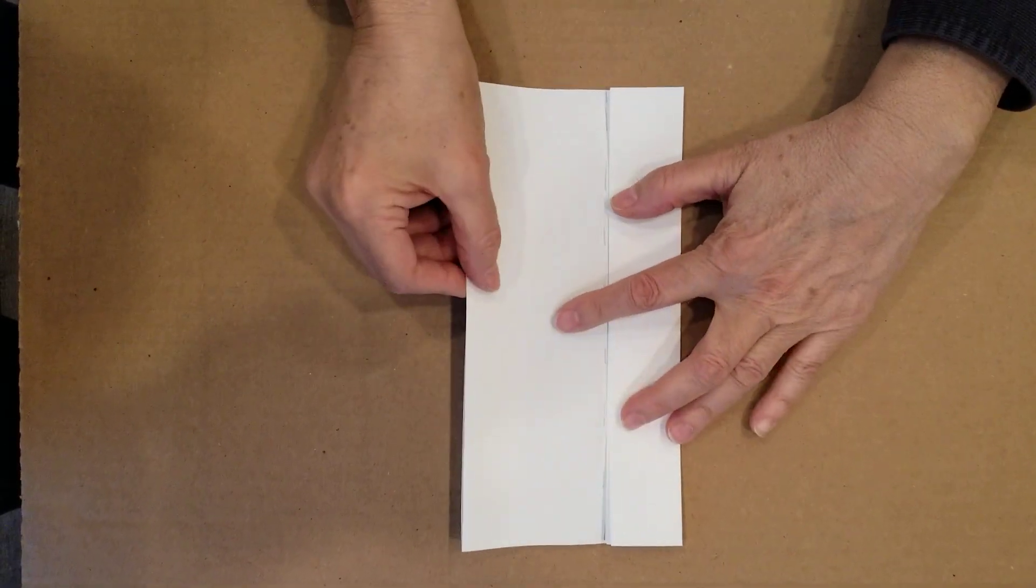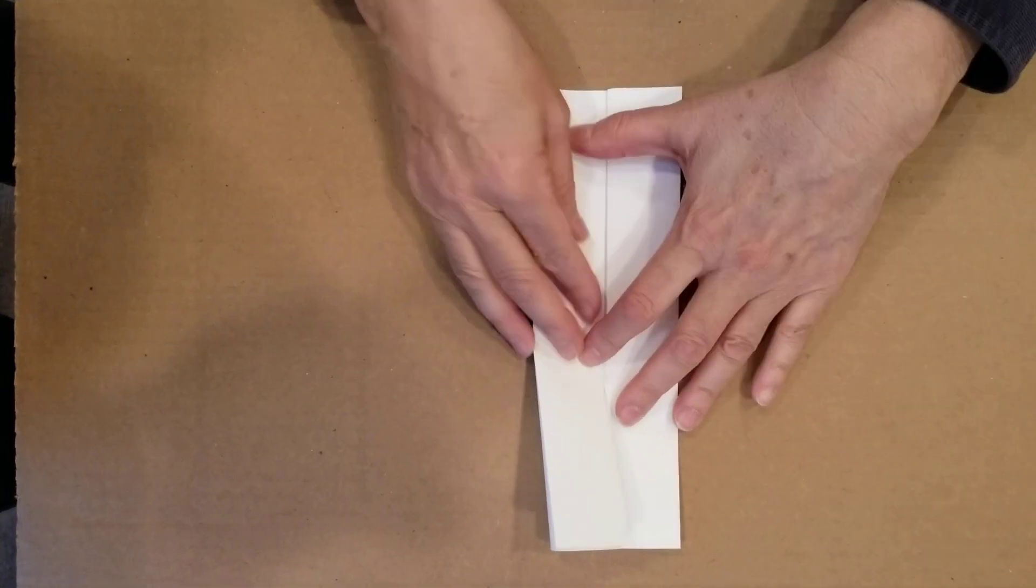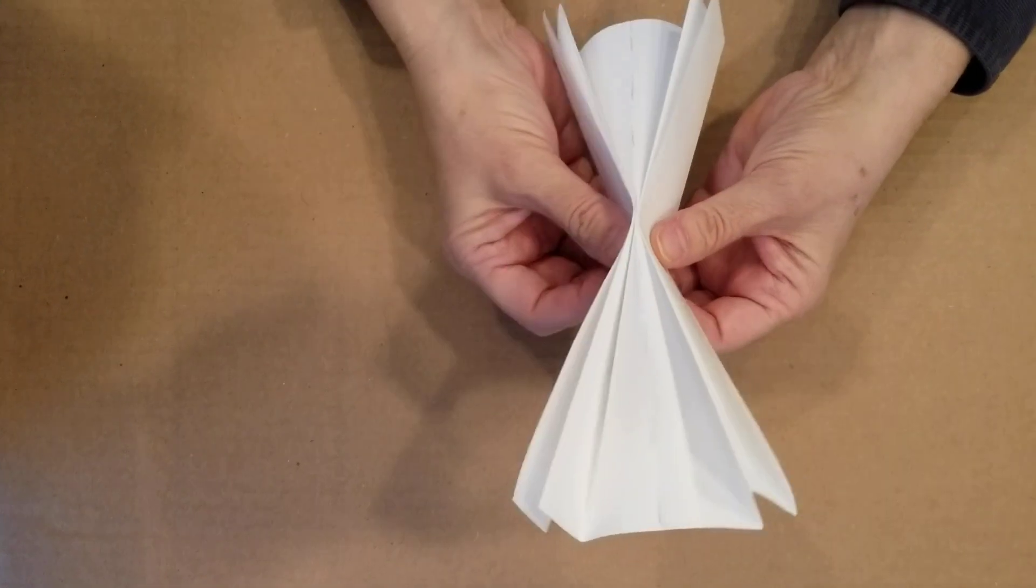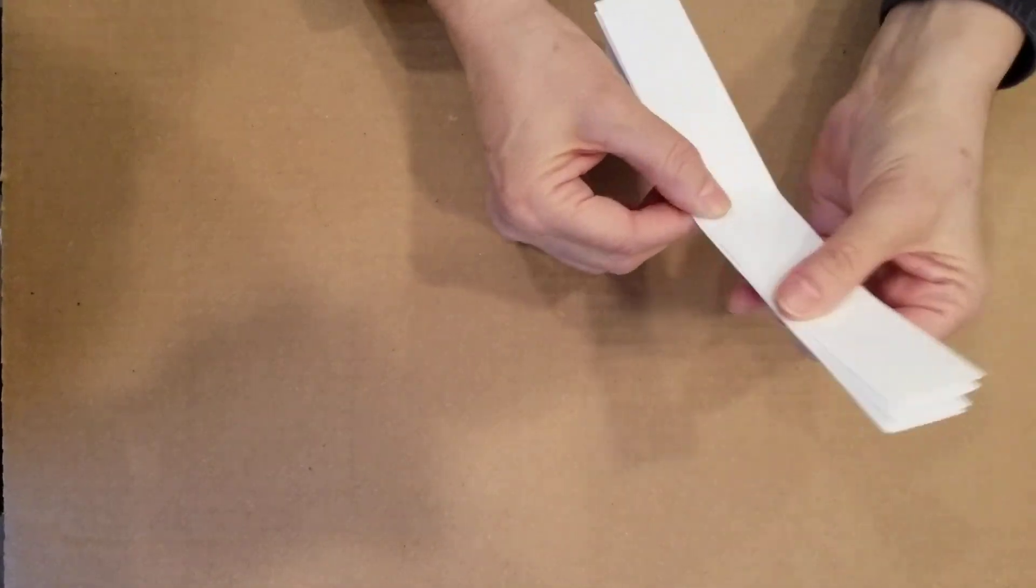And I'm going to do the same thing on this side. Press down and now this center fold gets reversed, so we see the lines.